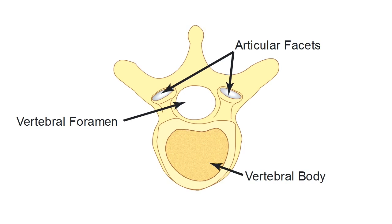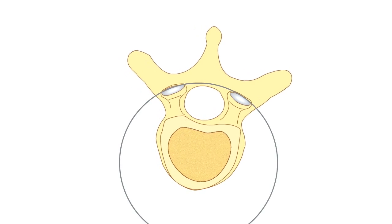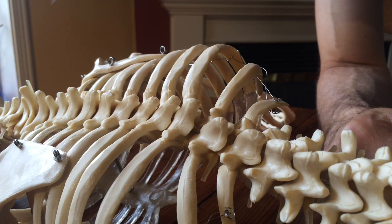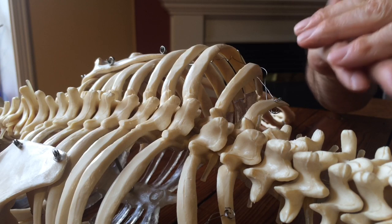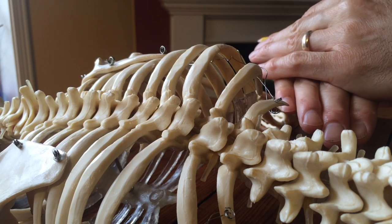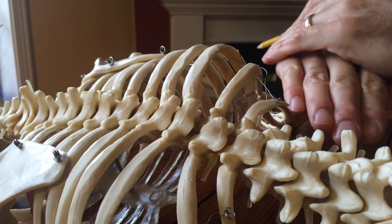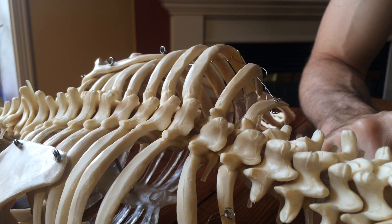The articular facets — these articular surfaces between each adjacent vertebrae — are what allow for rotation. In the cervical spine they sit almost completely flat in relation to one another, which allows for a great range of rotation up to 80 degrees in each direction, left and right.